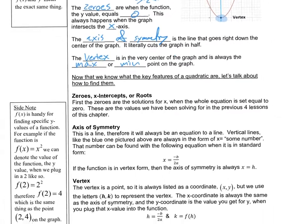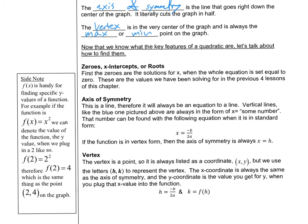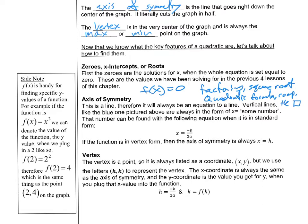Now let's talk about how to find these features. Zeros, x-intercepts, and roots are the solutions for x when the equation is set equal to zero. You can solve by factoring, by taking the square root if it's in vertex form, by using the quadratic formula, or by completing the square. Those are all different ways to find the zeros.